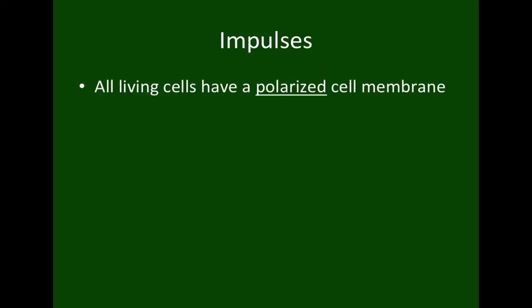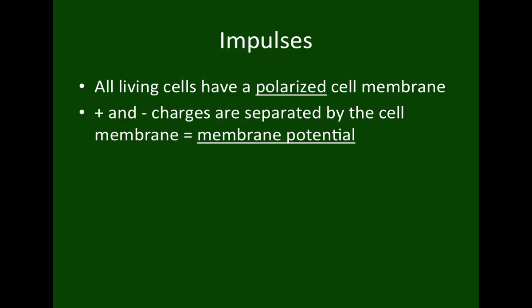In order to understand exactly how impulses work, we need to understand the setup that allows impulses to occur. All living cells have a polarized cell membrane. Much like a polar molecule in chemistry, we have charge differentials taking place across the cell membrane — positive and negative charges separated by the membrane, which we refer to as the membrane potential.